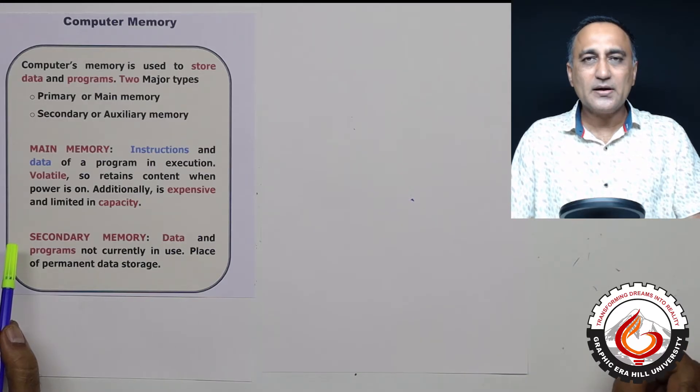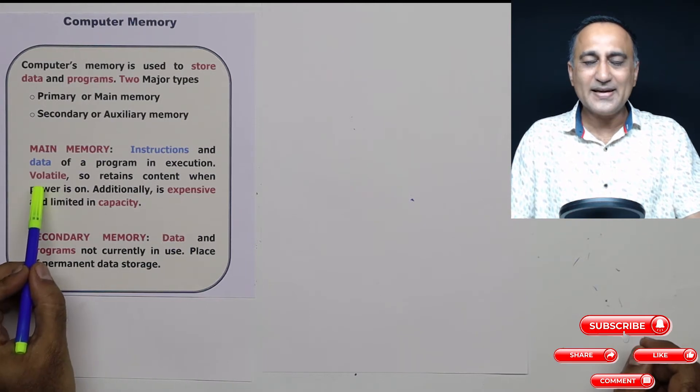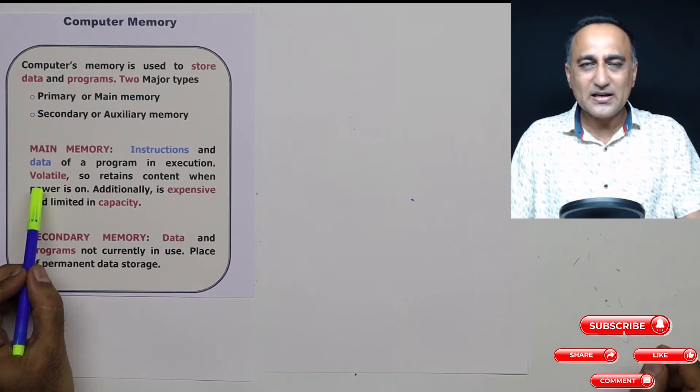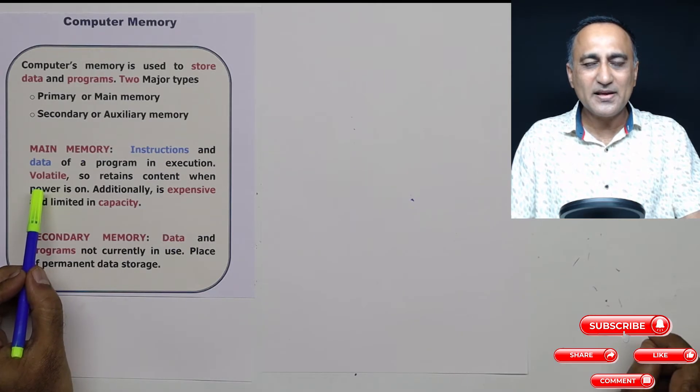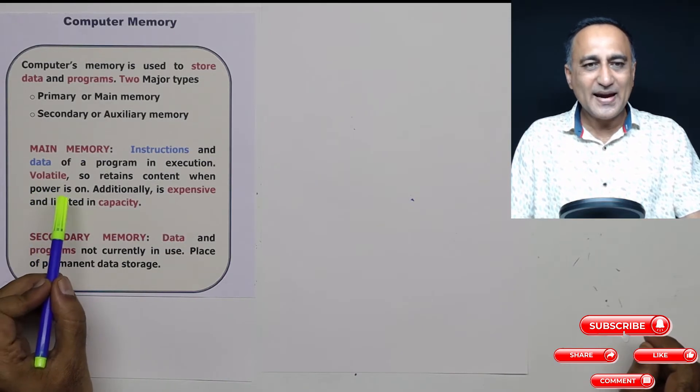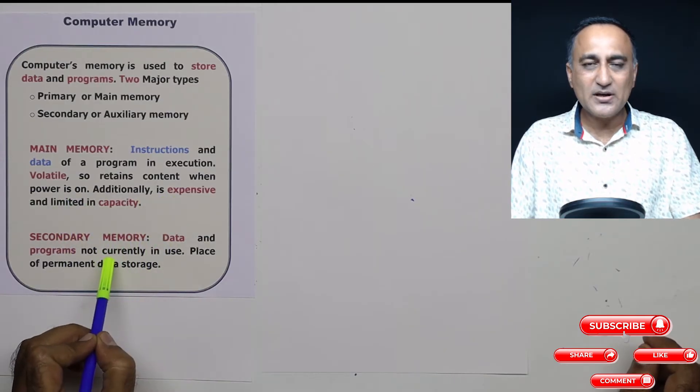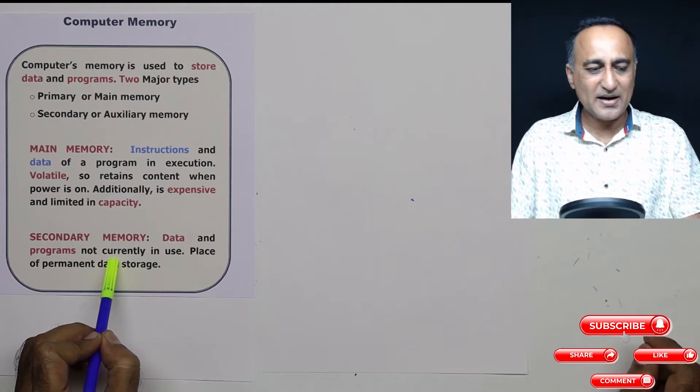Some important properties of this main memory. It is volatile in the sense, as long as the computer is on, that means the power supply is there, the contents of this memory will remain there. The minute you switch off the power, the content of the memory are lost. Additionally, it is very expensive as compared to the secondary memory or the hard disk.